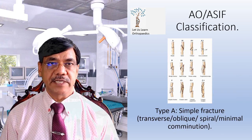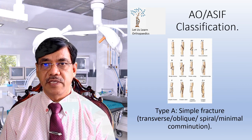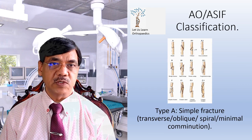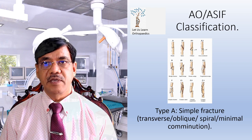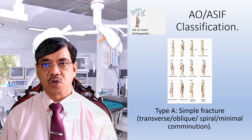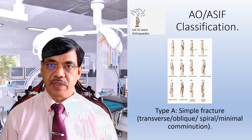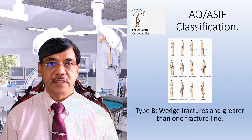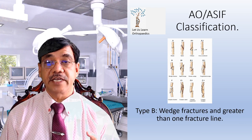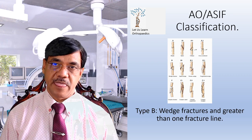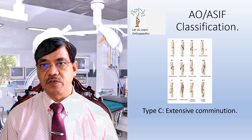AO or ASIF have adopted a similar classification. Type A: simple fractures, which may be transverse, oblique, spiral, or with minimal comminution. Type B: wedge fracture with greater than one fracture line. Type C: extensive comminution.